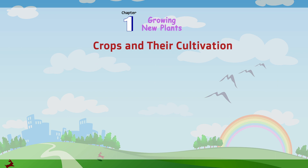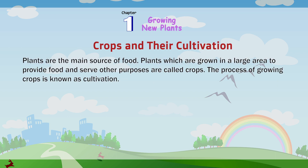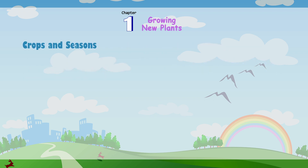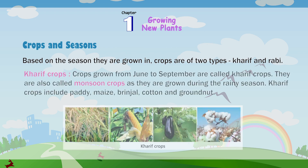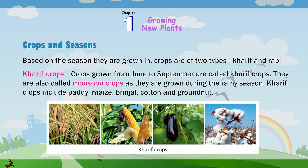Crops and their cultivation. Plants are the main source of food. Plants which are grown in a large area to provide food and serve other purposes are called crops. The process of growing crops is known as cultivation. Crops and seasons: based on the season they are grown in, crops are of two types — Kharif and Rabi. Kharif crops: crops grown from June to September are called Kharif crops. They are also called monsoon crops as they are grown during the rainy season.